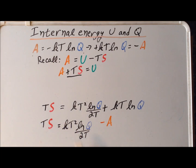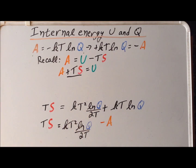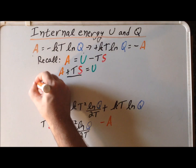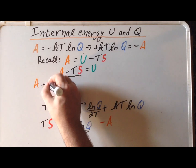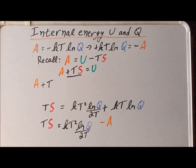We're going to need this fact in two more steps. Let us take our result in this particular equation and simply add the Helmholtz energy A to each side and see what we get. On the left-hand side, we're going to get A plus temperature times the entropy, TS.